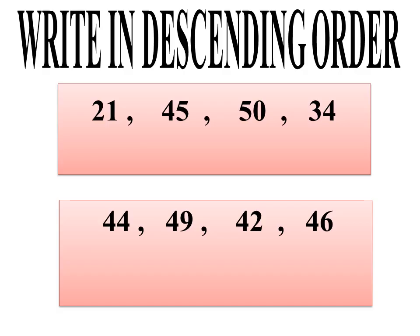Children, in the last class I gave you a small homework in descending order. Shall we see the answers now? In the first box, what are the numbers given there? 21, 45, 50, and 34.